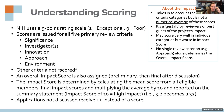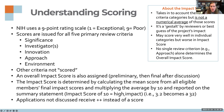An overall impact score is also assigned — tentatively during pre-meeting review, then finalized during the meeting. The overall impact score is calculated by taking the mean score from the three reviewers' final impact scores and multiplying by 10. So if the mean is 3.2, the proposal's impact score becomes 32. The impact score is not a numerical calculation of the five scoring criteria — it's considered a gestalt of those criteria. No single review criterion is more important than another from NIH's perspective.